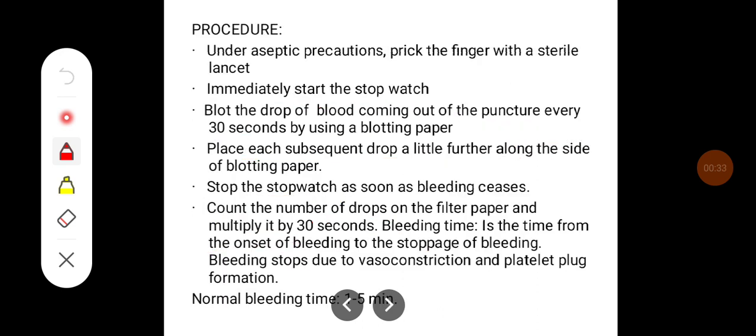The procedure is very simple. Under aseptic precaution, prick the finger with a sterile lancet, then immediately start the stopwatch. Blot the drop of blood coming out of the puncture every 30 seconds using blotting paper. Place each subsequent drop a little further along the side of the blotting paper. Stop the stopwatch as soon as bleeding ceases.